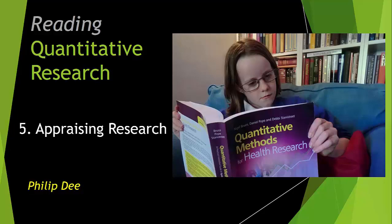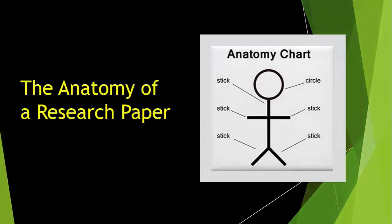All research papers pretty much have a broadly common structure. We can refer to this as the anatomy of a research paper. It's worth noting that in general both qualitative and quantitative papers have the following sections in common.